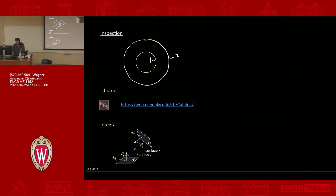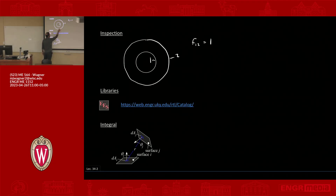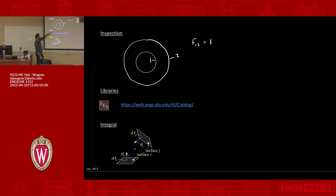So by inspection, F_12 equals one. What about F_21? A photon emitted from surface two could either hit itself or hit surface one, and without knowing more about the geometry we can't determine that fraction. You have to be careful not to become mentally lazy and assume that because F_12 is one, the opposite must also be true — it's not.